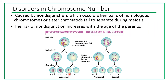Some gametes will have n minus 1 number of chromosomes. For humans, n equals 23, so either a gamete has 22 (n minus 1) or 24 (n plus 1). When non-disjunction occurs in meiosis 1, all gametes are abnormal.